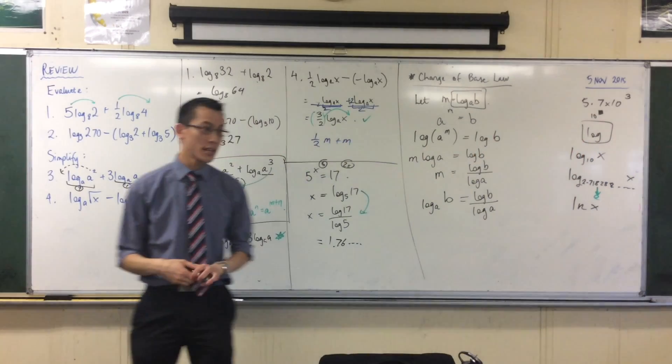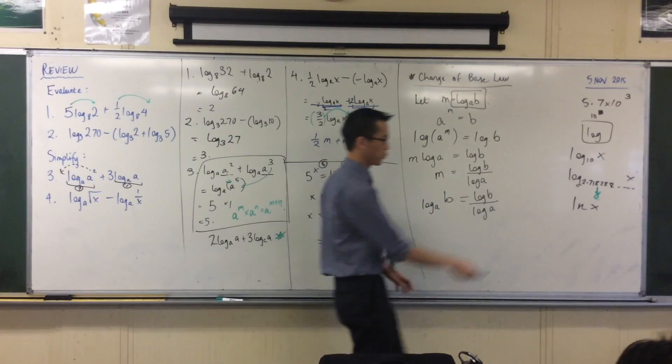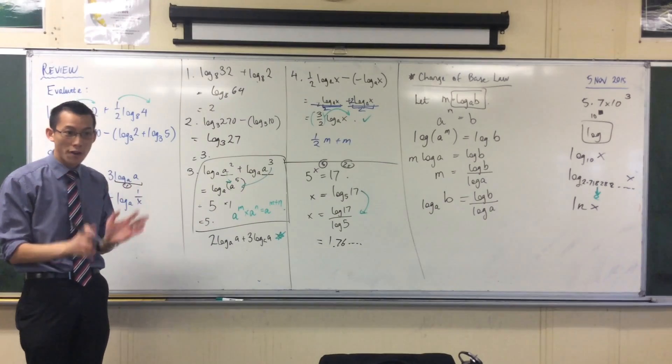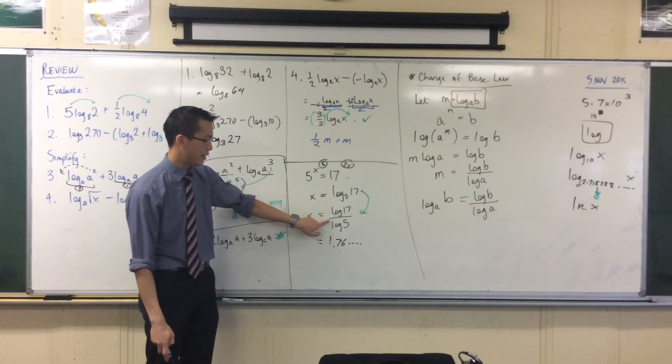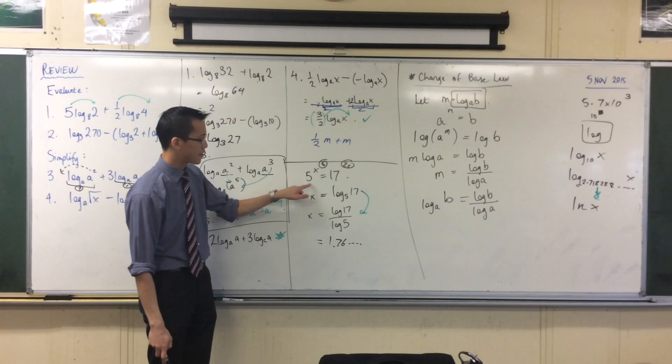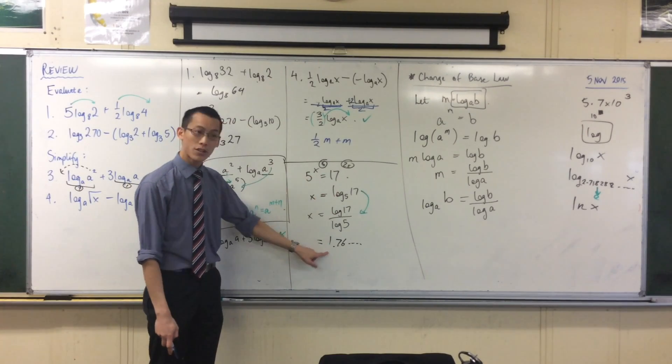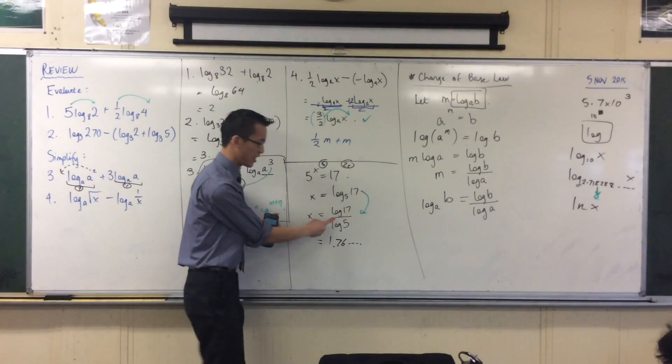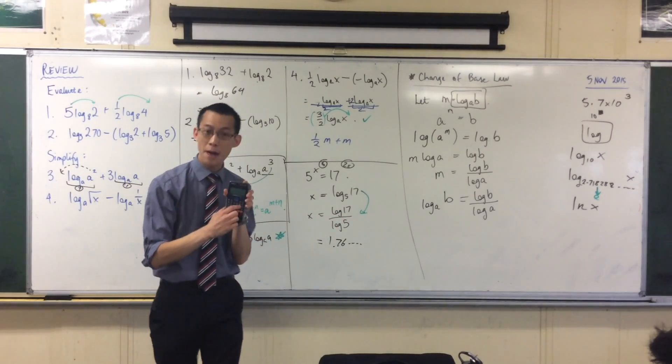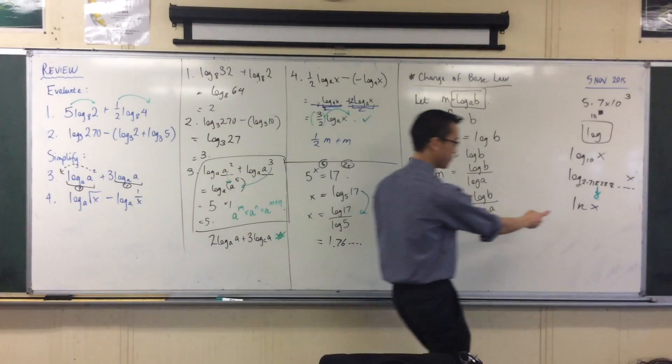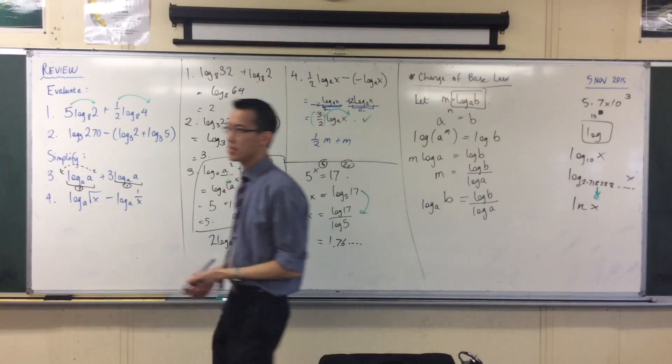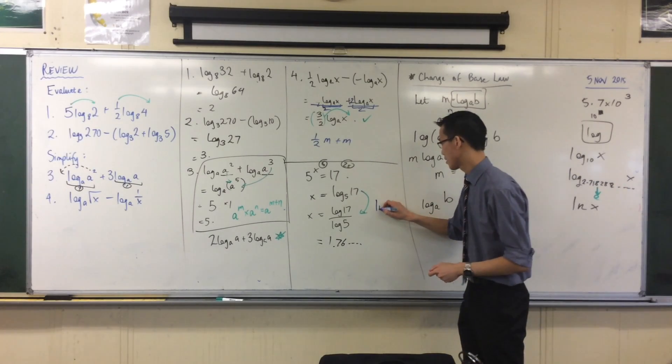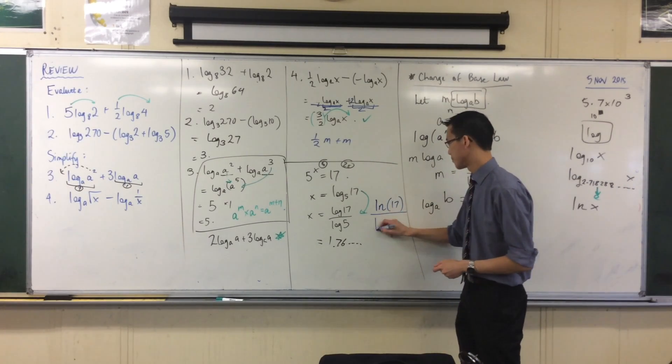It can be base 10. It can be base this weird 2.71 number. It can be base pi. It can be base 52. I don't care. It'll work for everything. In fact, I actually want you to try this out quickly now. Remember we did this. 5 to the power of something equals 17. And we got this number out by using this in our calculators. Just to show you that it's going to work with any number, instead of punching in log 17, log 5, that button there, I want you to go over to the one just to the right, this one, which is another log, but they're just choosing a different base. So it's going to end up looking, your calculator display will look something like this.